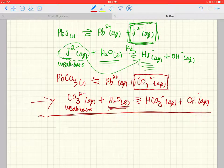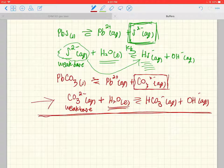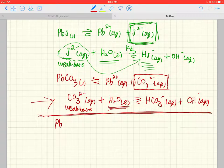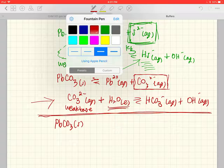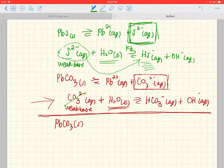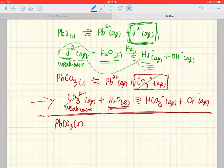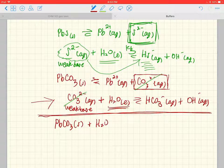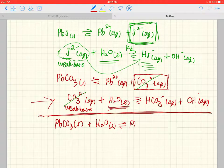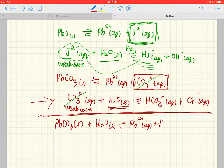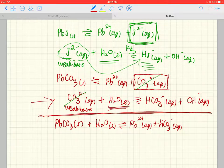Just for kicks, let's add these two equilibria together. On the left we have lead carbonate (PbCO3). You'll notice that we have carbonate on both the left and the right, so I'm not going to write that. We have H2O liquid on the left, and that's in equilibrium with lead ion, bicarbonate, and hydroxide.